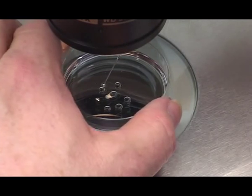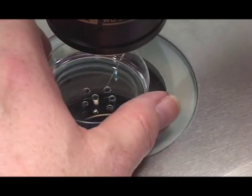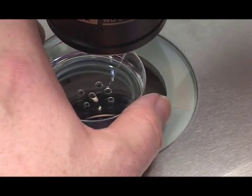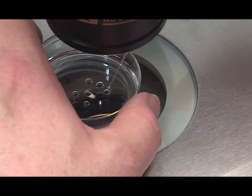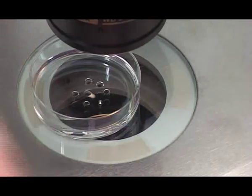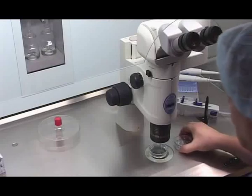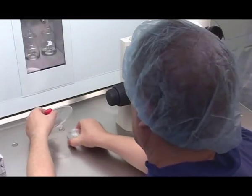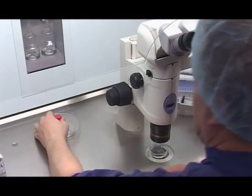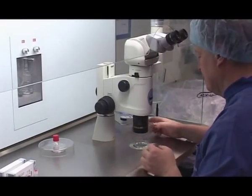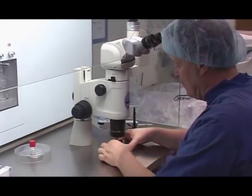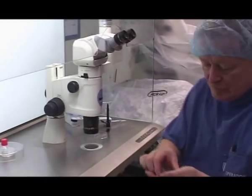Place one oocyte in each holding media drop. Incubate the remaining oocytes. Carefully transfer the prepared ICSI dish to the inverted microscope.